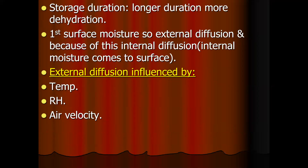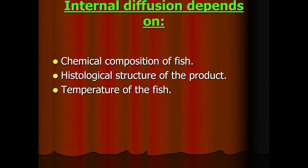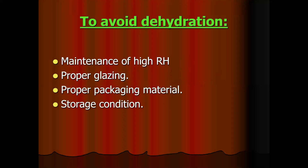Dehydration begins with the loss of surface moisture through external diffusion. Then internal diffusion causes internal moisture to come to the surface, which may change the quality. External diffusion is influenced by temperature, relative humidity, and air velocity — the storage temperature conditions. Internal diffusion depends upon the chemical composition of fish, histological structure of the product, and temperature of the fish. To avoid dehydration, we must maintain high relative humidity of 90 to 95 percent in the cold store and apply a protective treatment.